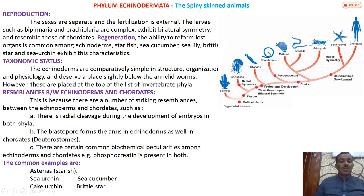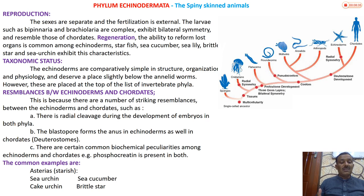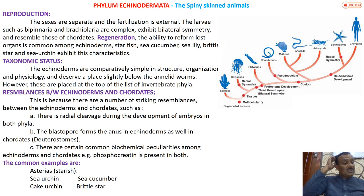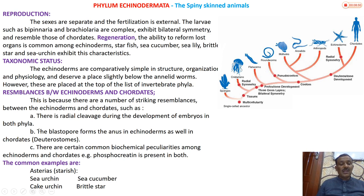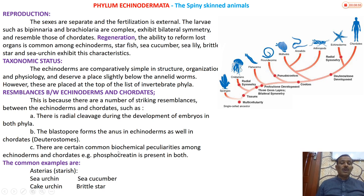The main reason echinoderms are placed just before chordates in taxonomy is the number of striking resemblances between echinoderms and chordates. For example, there is radial cleavage during the development of the embryo in both groups. Both are deuterostomes. This suggests that both may have evolved from the same ancestor.